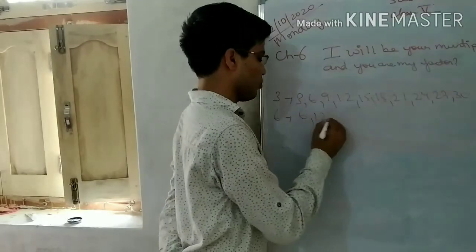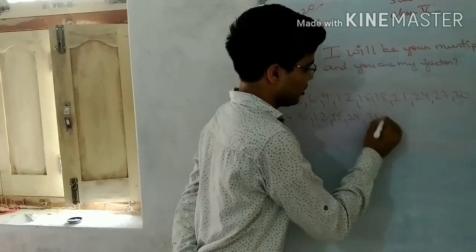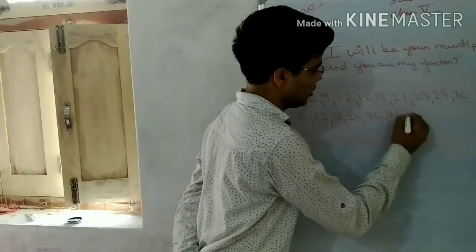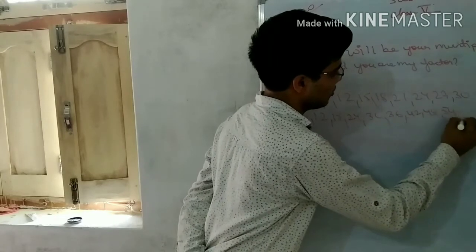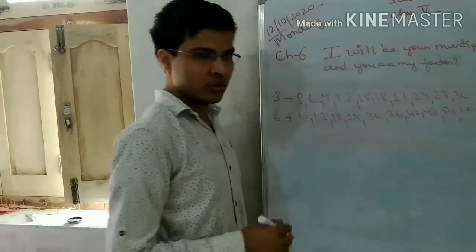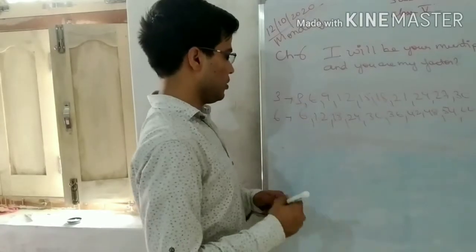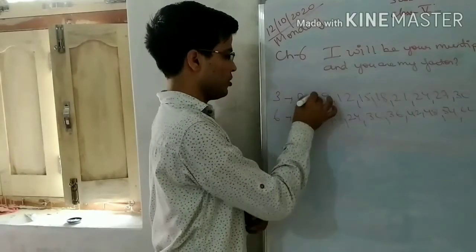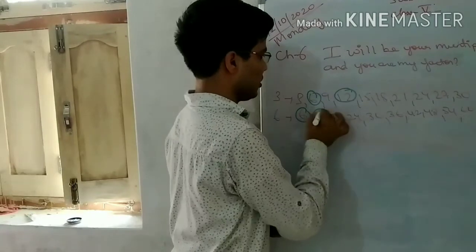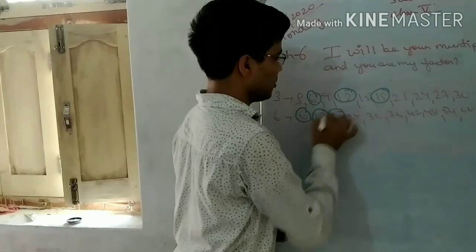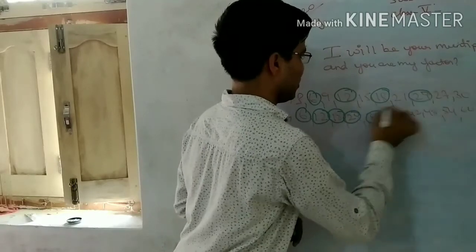And for 6: 6, 12, 18, 24, 36, 42, 48, 54. So you will find the common multiples. The first one is 6, second is 12, third is 18, fourth is 24, and fifth is 30.